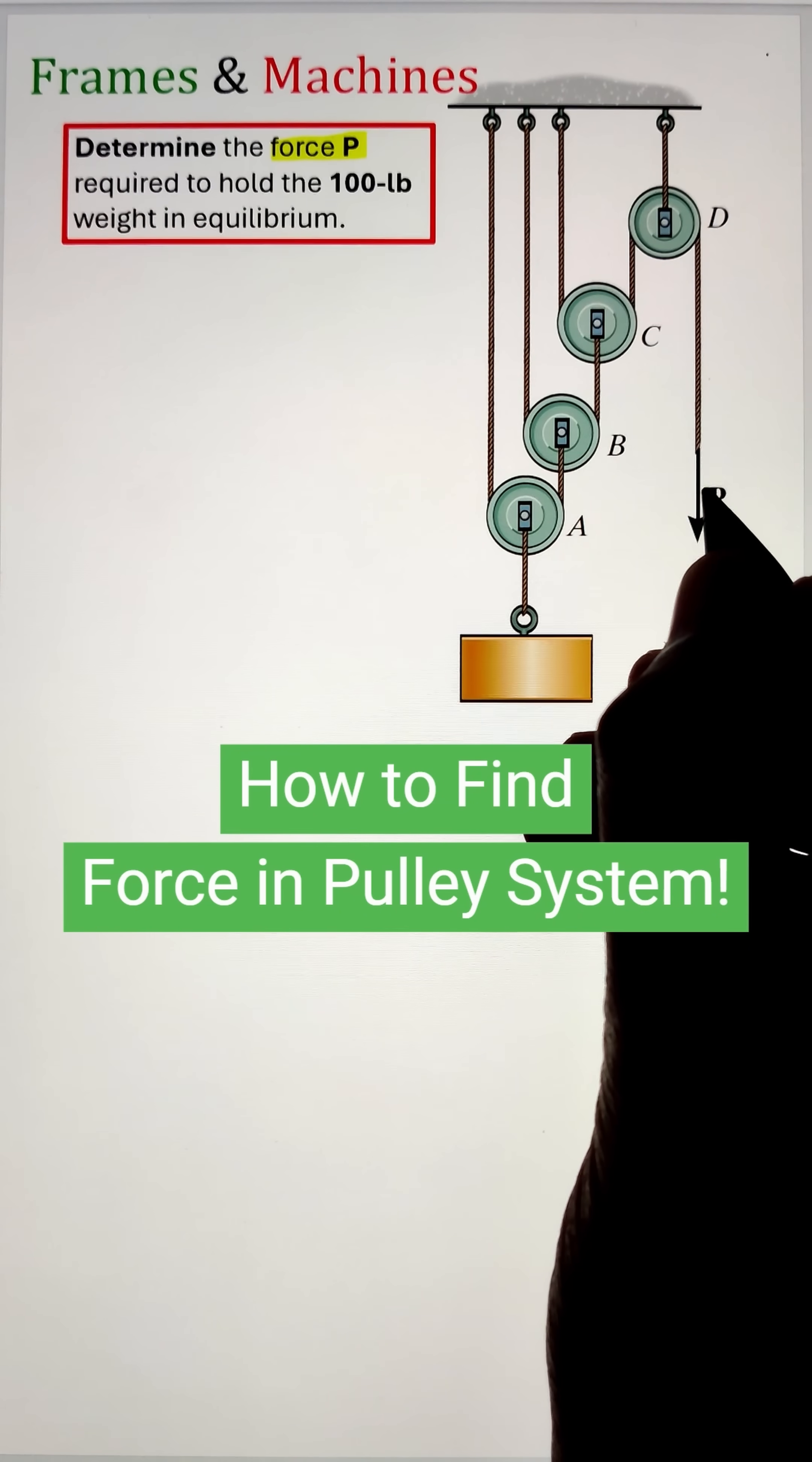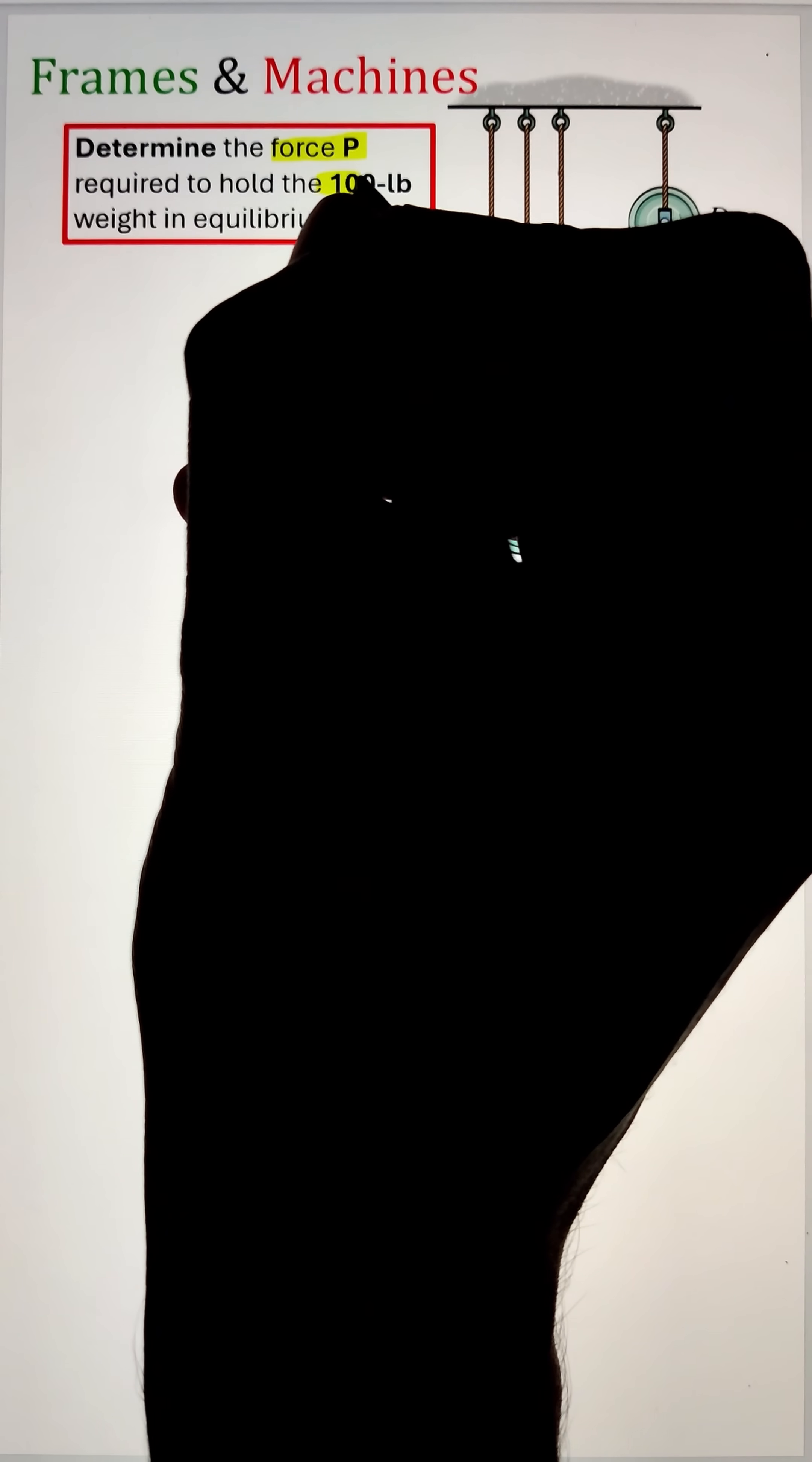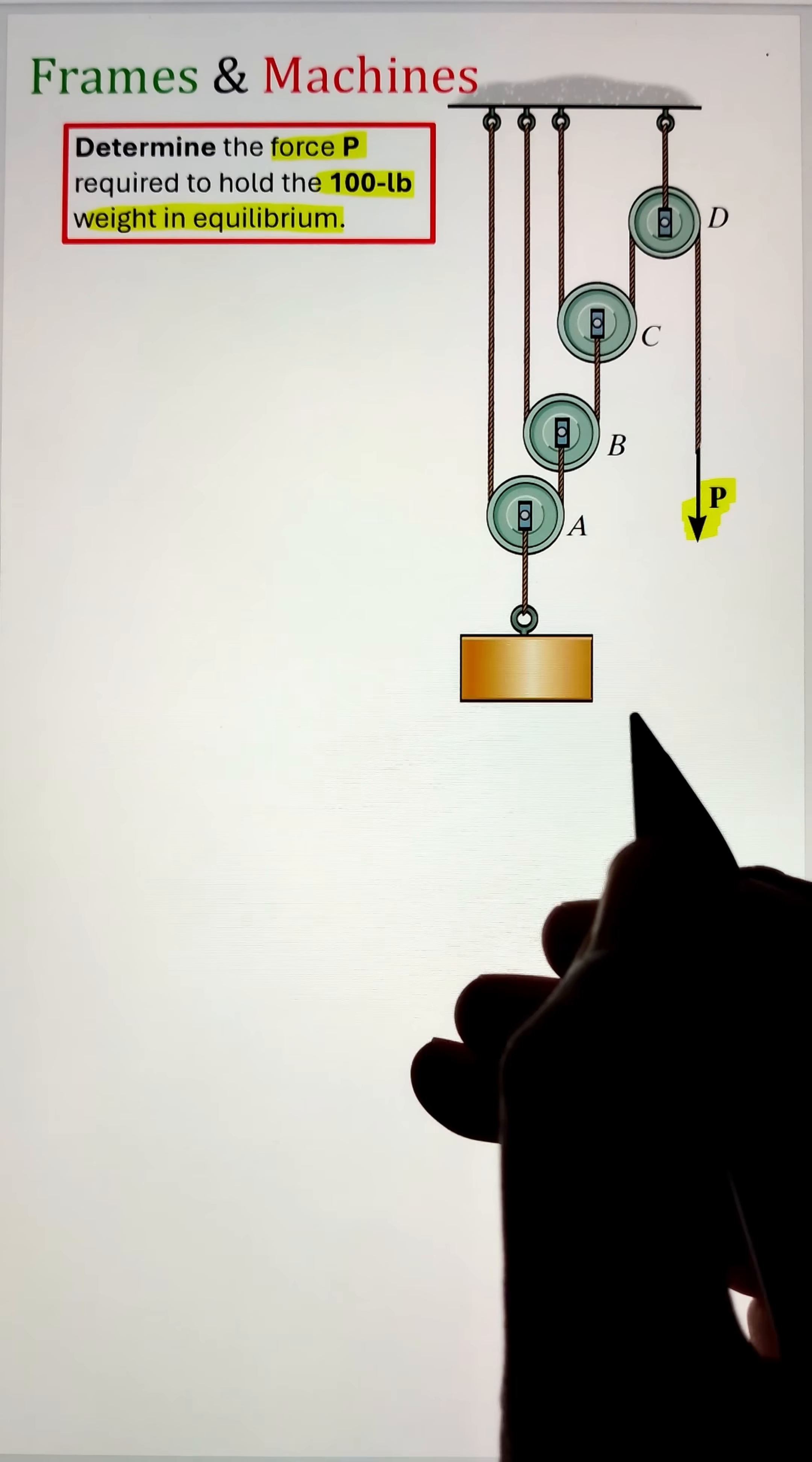In order to figure out the force P required to hold the 100 pound weight in equilibrium for the pulley system as shown in the figure,